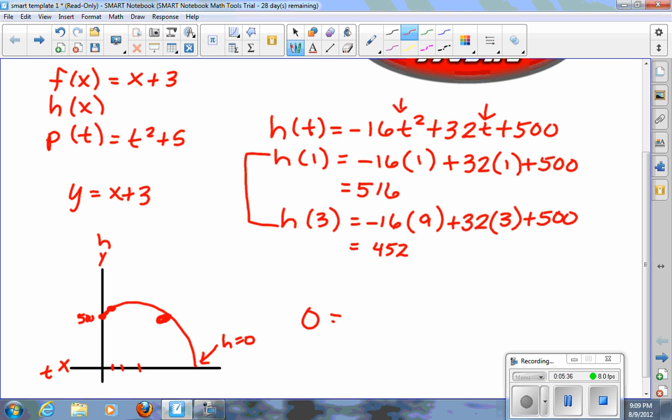you can also substitute a number in for y or h in this case. See, I could say that 0 = -16t² + 32t + 500. And I'd stare at this for a long time and try to figure out what I could plug in for a t to make that a 0.